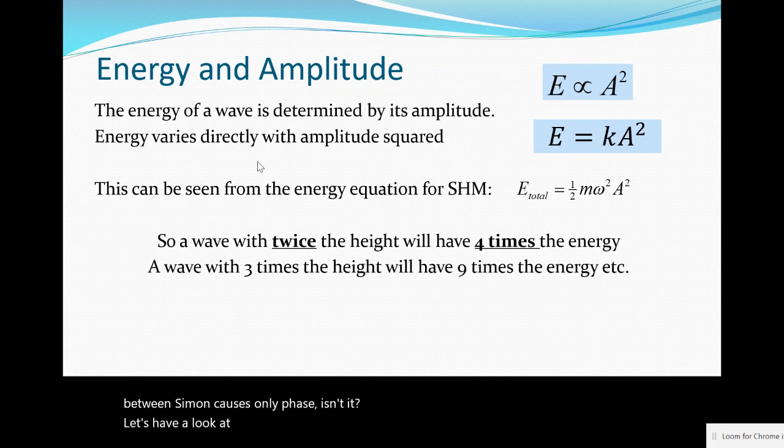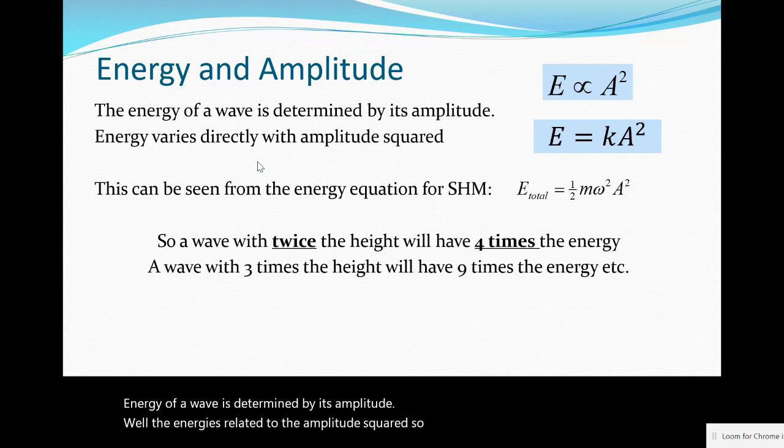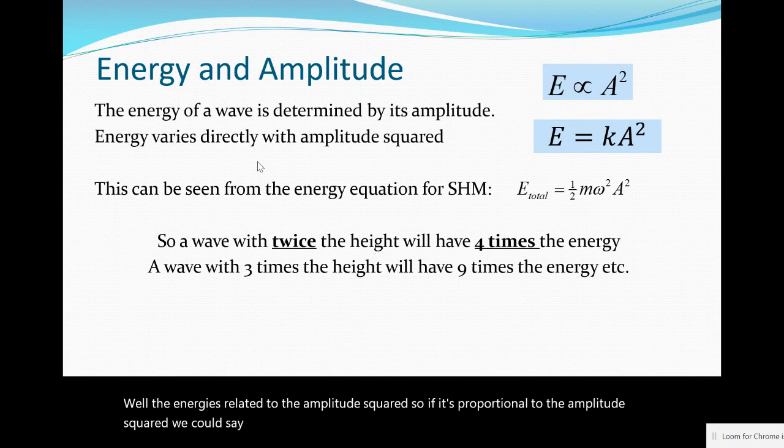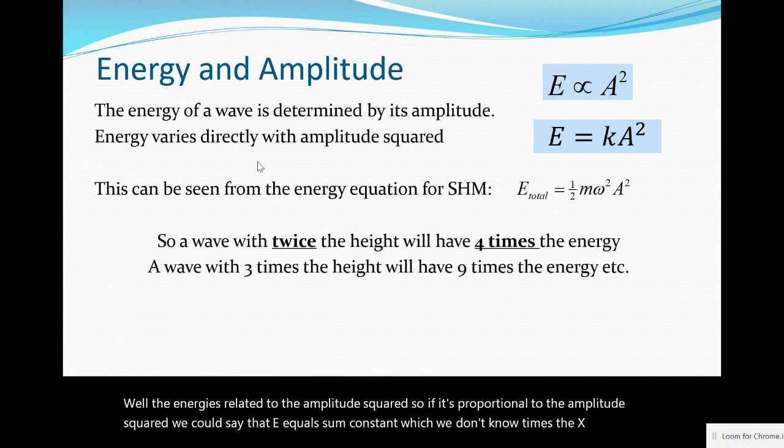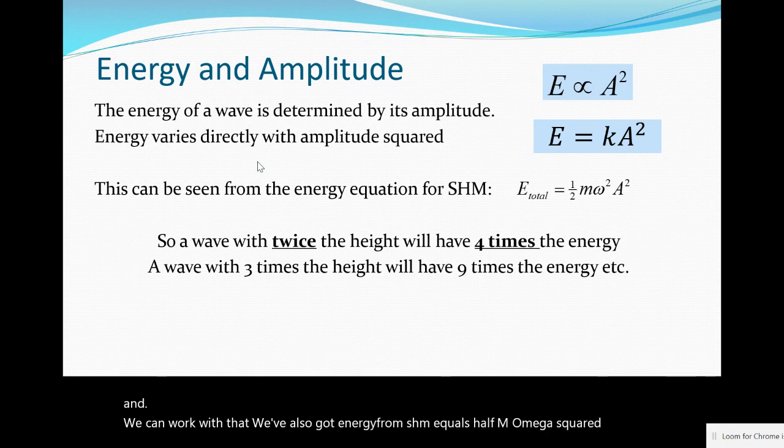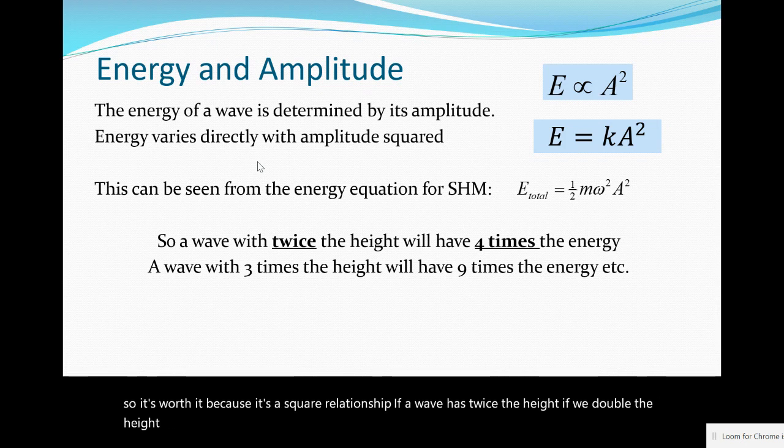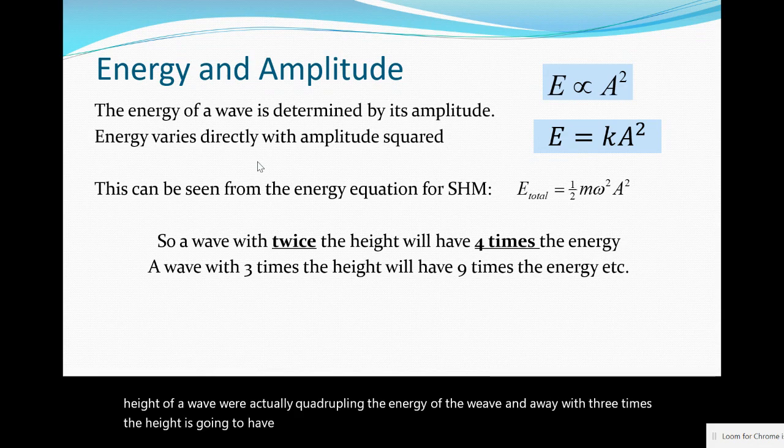Energy of a wave is determined by its amplitude. The energy is related to the amplitude squared, so E is proportional to A². We also have energy from SHM equals ½mω²A². It's worth knowing because it's a square relationship: if we double the height of a wave, we're actually quadrupling the energy. A wave with three times the height is going to have nine times the energy.